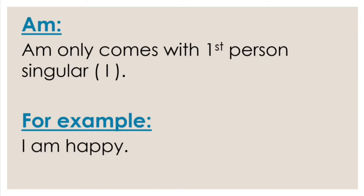'Am' only comes with first person singular, which is 'I'. First person singular ke saath aata hai. First person singular kya hote hai, kitne persons hote hai, aur korn korn se persons hote hai — ye jaanne ke liye aap dekh sakte hai meri video on first, second and third person — link description me daal ho ga. So 'am' hamayshya 'I' ke saath aata hai. For example: 'I am happy.'